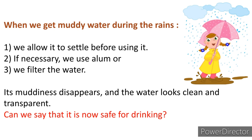Or we can filter the water — we can put it through a filter, aqua guard, or steel filters are also used. Using all these methods, the muddiness disappears: the mud settles at the bottom and the water looks clean and transparent. But should we drink that water? No — we still cannot drink such water, because it may still not be potable. Even if it looks clean, it may contain very small soil particles or other impurities. So we cannot say it is safe for drinking.